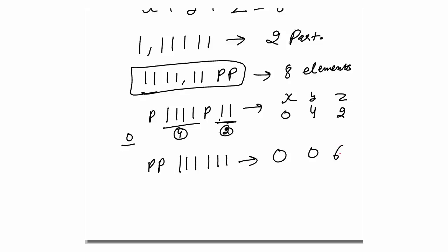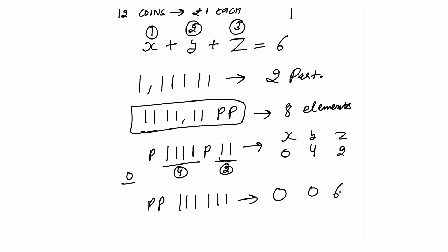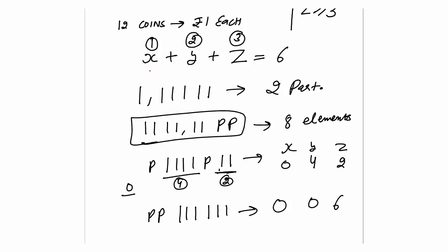In the partition method, values can be 0. That's why I already gave x, y, z their 1, 2, and 3 coins first. Now even if the partition gives 0, 0, and 6, the actual distribution is 1, 2, and 9. So the total becomes 12.